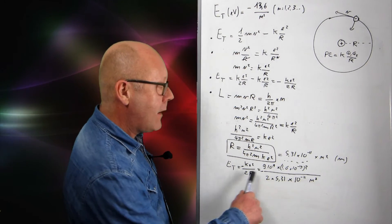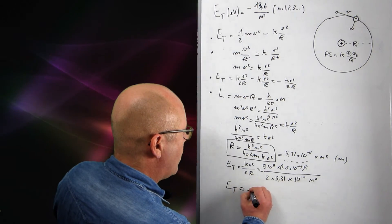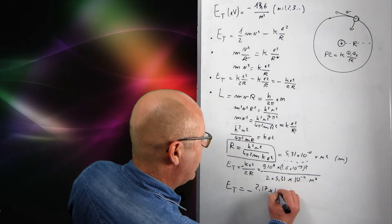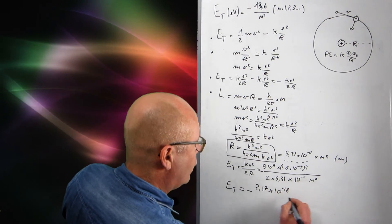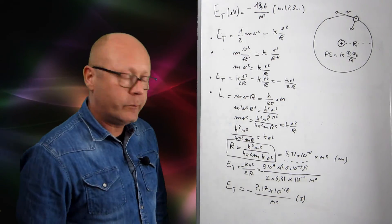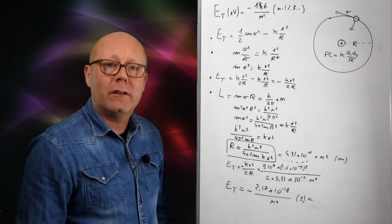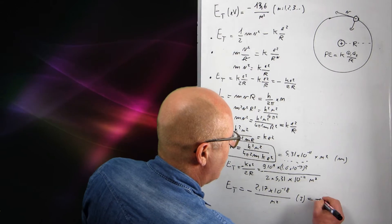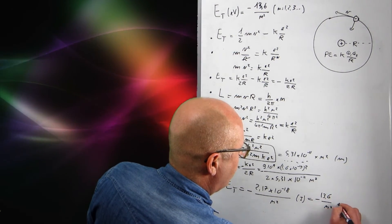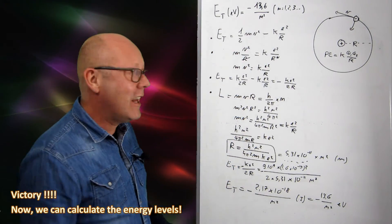Now, if I plug this in my calculator, I find that the total energy is equal to minus 2.17 by 10 to the minus 18 joules on n-squared. So that gives me the energy in joules. And if I want it in electron volts, I just need to divide this by 1.6 by 10 to the minus 19, and I get minus 13.6 divided by n-squared electron volts. And then now, I'm ready to calculate my energy levels.